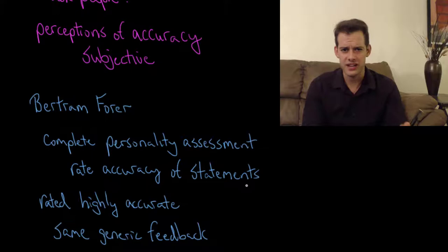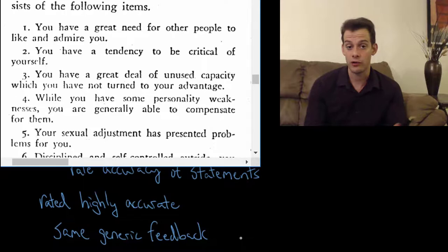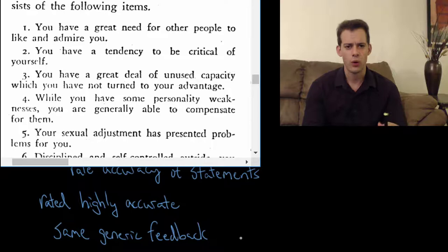So to understand this let's take a look at some of these statements. And I'll post a link in the video description where you can read Forer's original paper published in 1949. So here's a few of the statements. You have a great need for other people to like and admire you. You have a tendency to be critical of yourself. You have a great deal of unused capacity which you have not turned to your advantage.